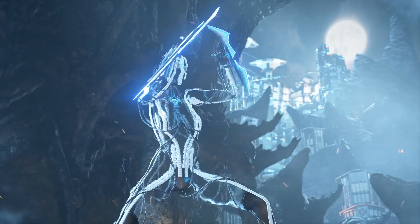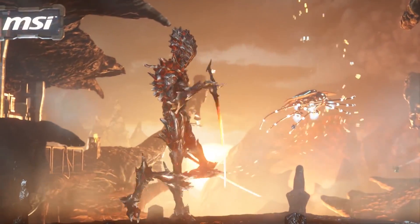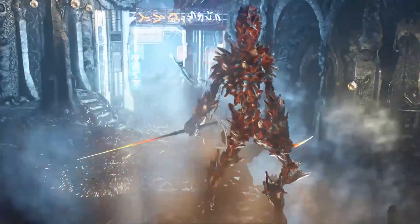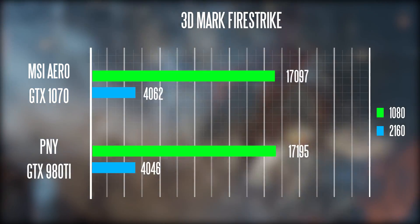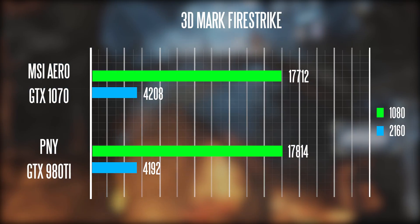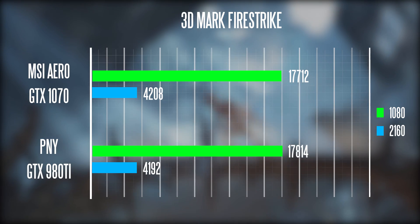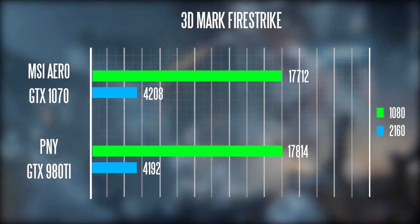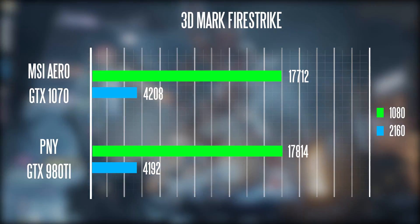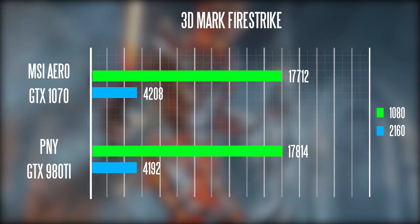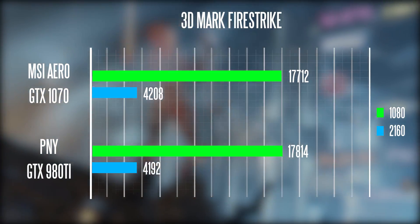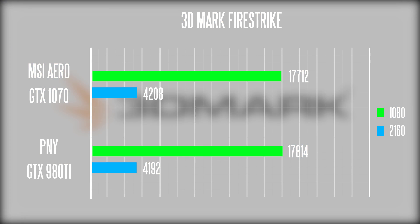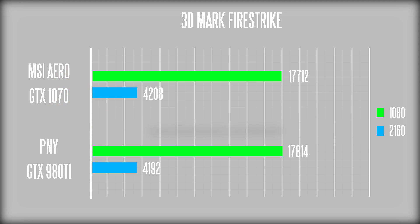When it comes to actual gaming performance, we'll first take a look at the synthetic 3DMark Firestrike benchmark. At 1080p, both cards are very similar with a slight advantage going to the 980 Ti. But once we start ramping up the resolution, there's a hint of more performance coming out of the GTX 1070, probably because it has more video memory. Beyond these results, let's take a look at some real world gaming benchmarks at both 1080p and 4K resolution, so you have a good idea of how these two cards stack up.